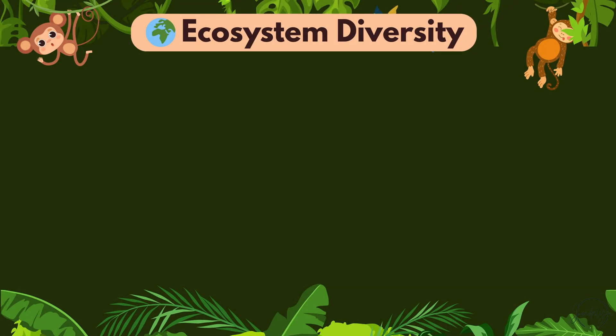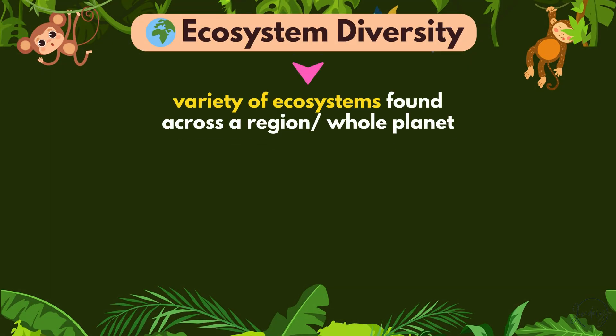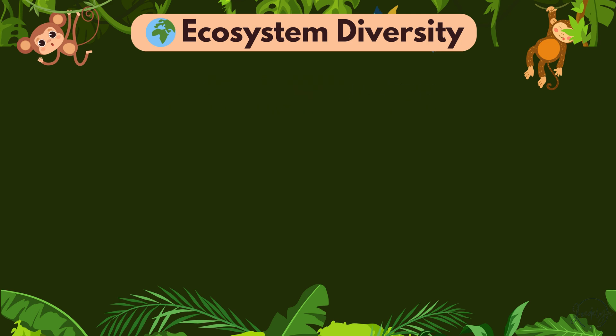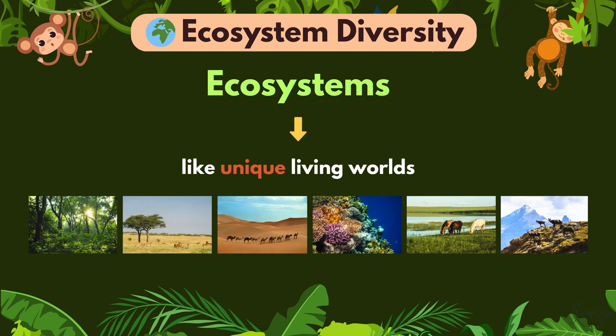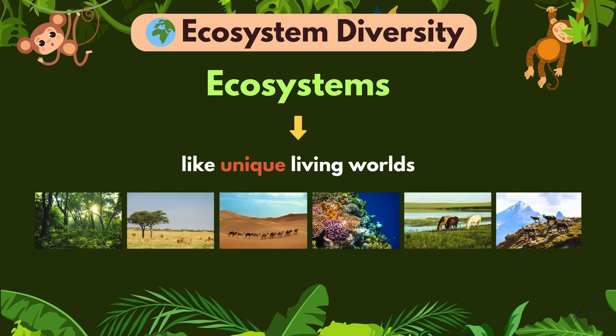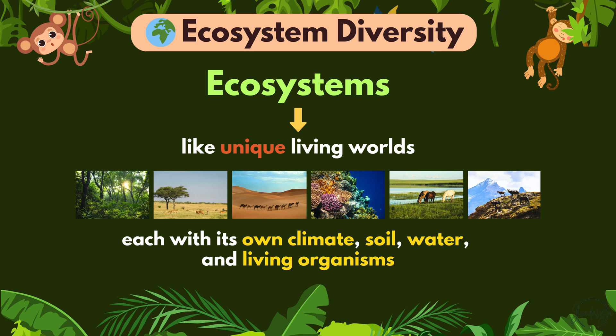Ecosystem diversity is the variety of ecosystems found across a region, or even across the whole planet. Ecosystems are like unique living worlds, each with its own climate, soil, water, and living organisms.